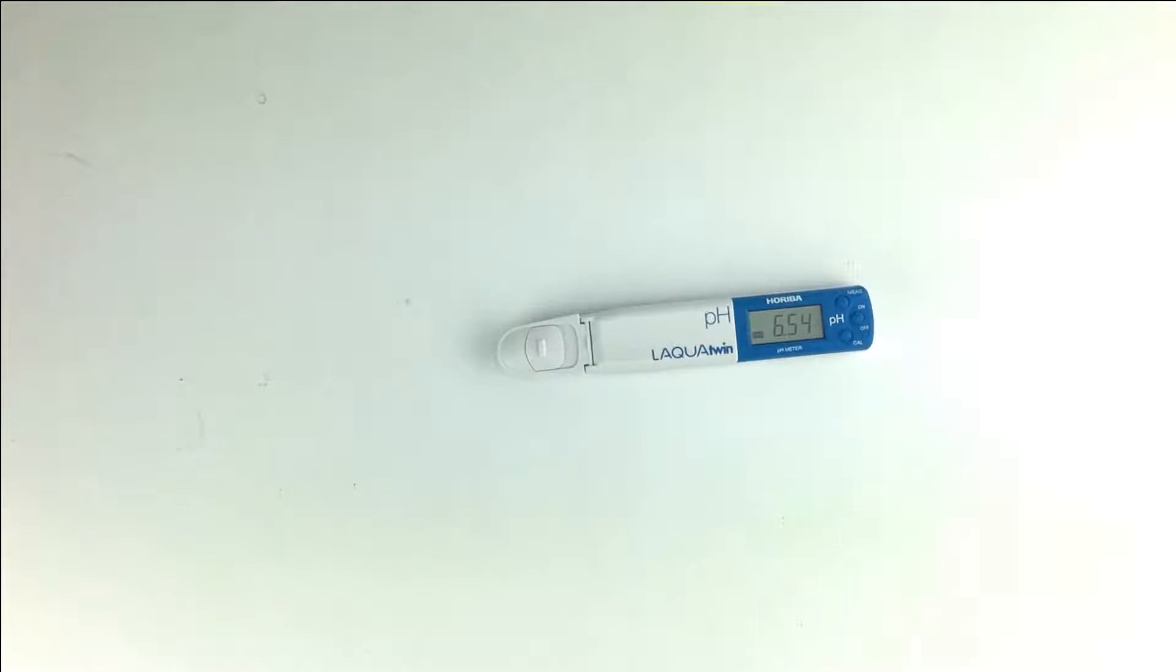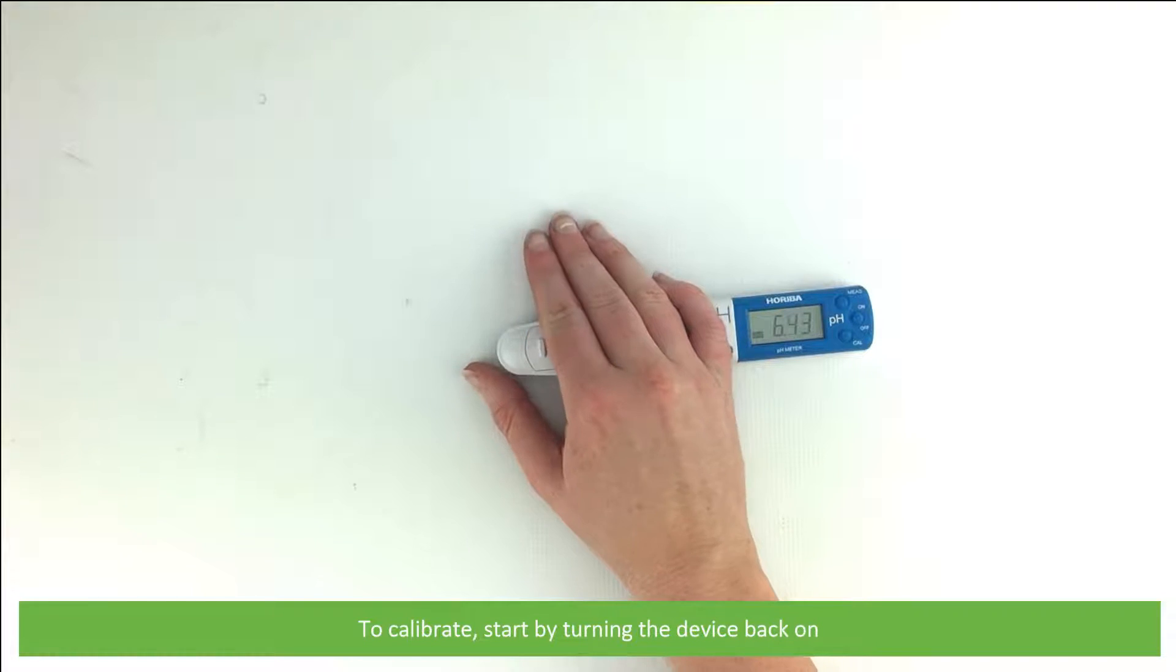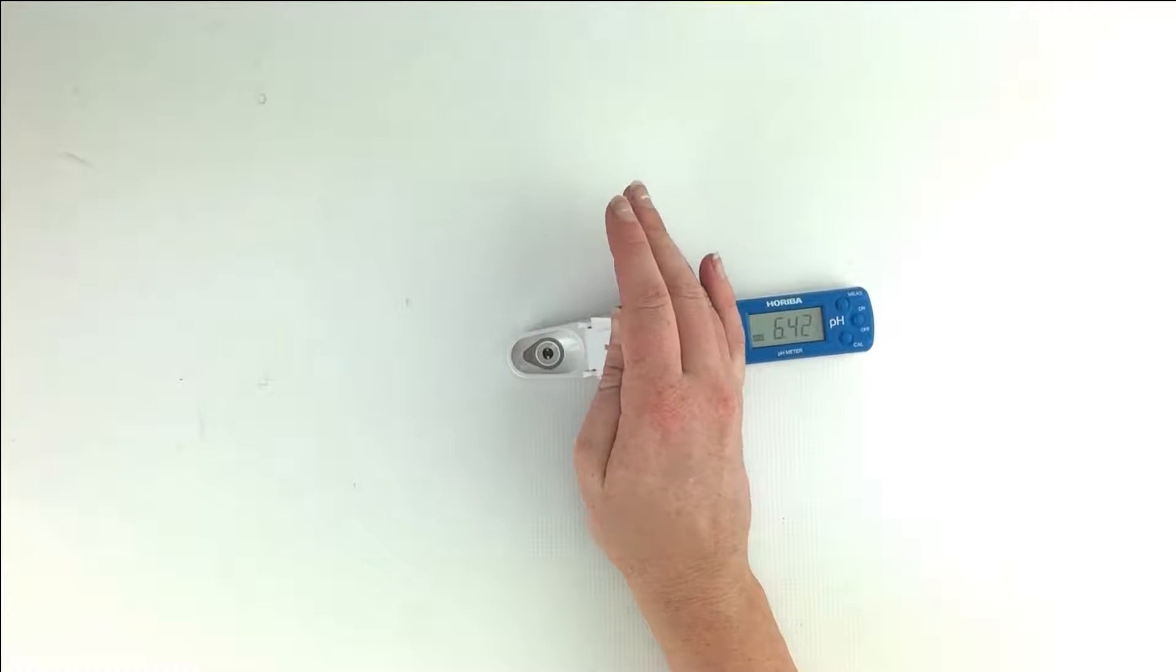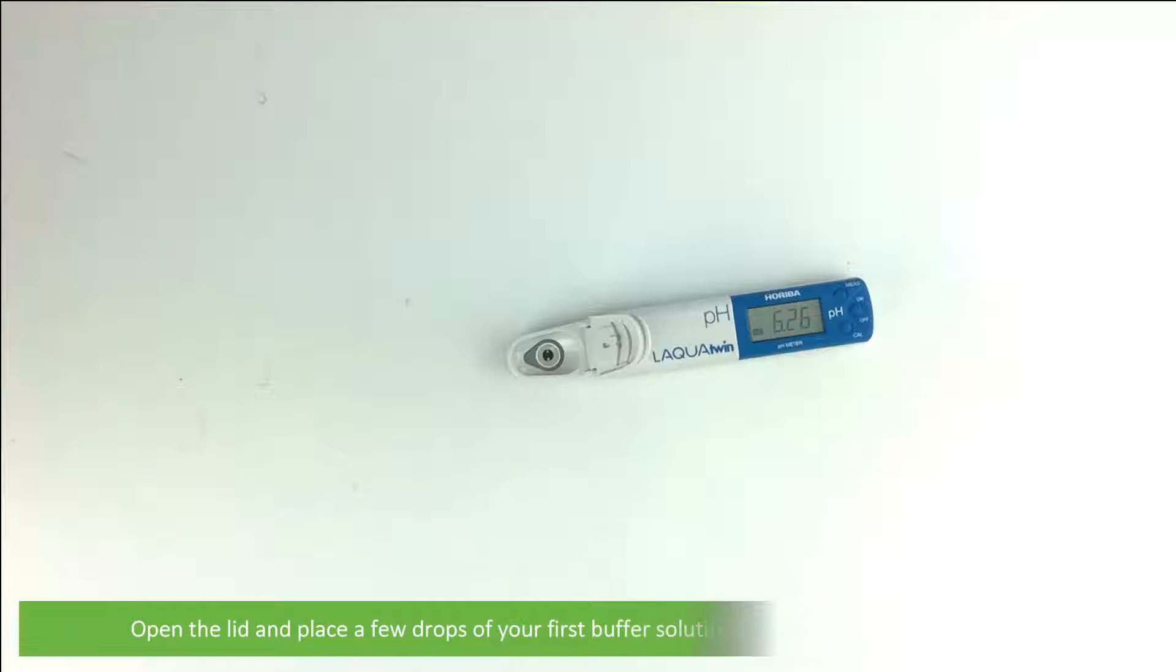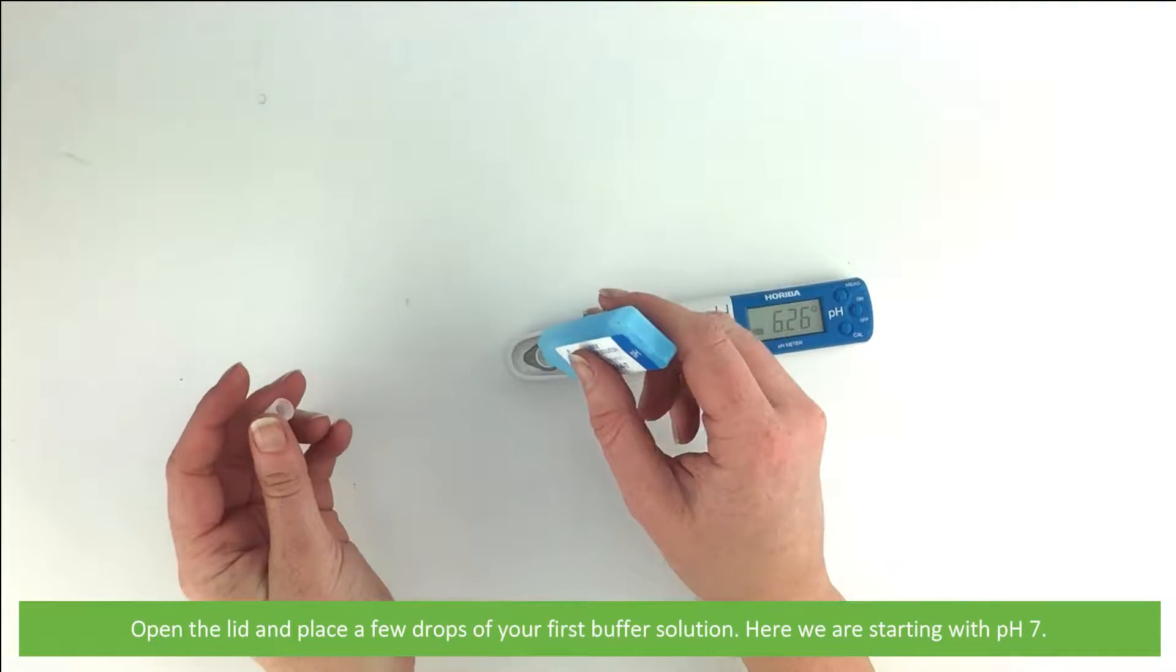To calibrate, start by turning the device back on. Open the lid and place a few drops of your first buffer solution. Here we are starting with pH 7.